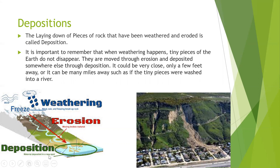Here is an example of how the cycle works. First you have weathering, which breaks down large rocks into small particles. Then wind, rain, and gravity are forces that move those small pieces downward — that is called erosion. Finally, after the particles are moving, they eventually stop, and wherever they stop, they get deposited there — and that is known as deposition.